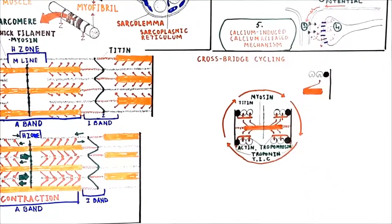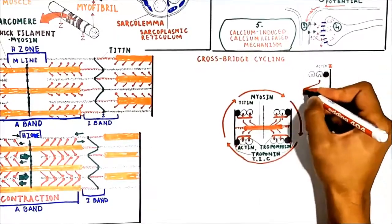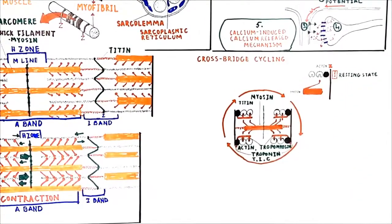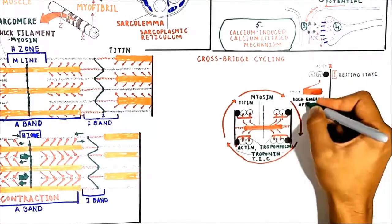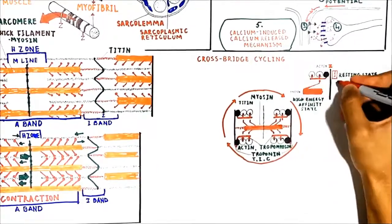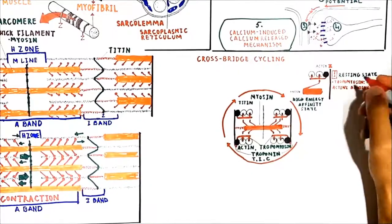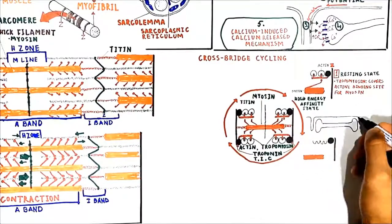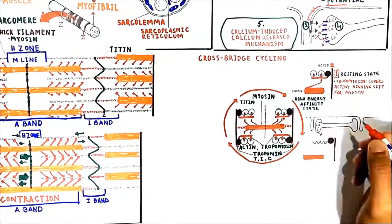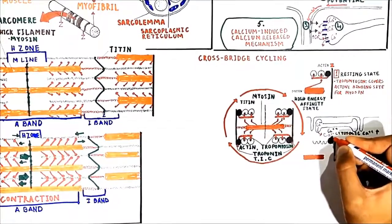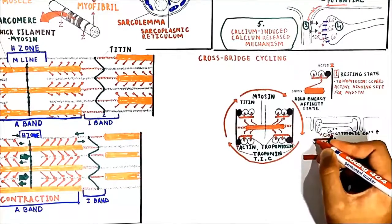In the first step, the resting state: myosin is in a high-energy, high-affinity state and would bind to actin, but tropomyosin covers the attachment points for the myosin head. Depolarization opens ryanodine receptor channels and cytosolic calcium rises. This free cytosolic calcium binds to troponin C, exposing the myosin binding site on actin.